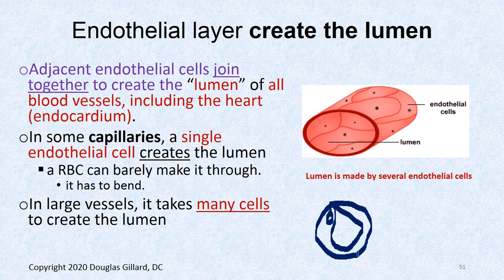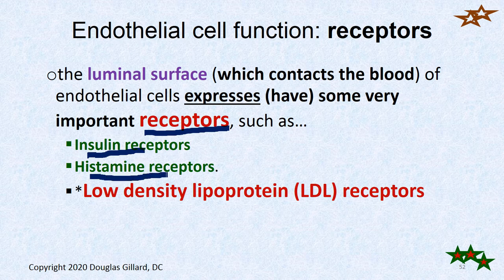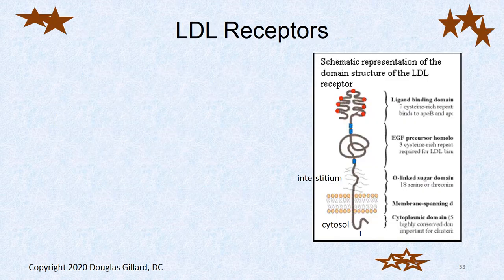The entire endothelial cell may wrap to form the lumen — one cell may make the lumen in small capillaries. In venules, you might have a dozen or so cells contributing to the lumen. The luminal surface has receptors important for hooking up with molecules: insulin receptors, histamine receptors, and LDL receptors, which are really important in pathology.